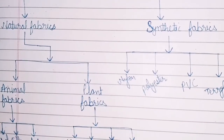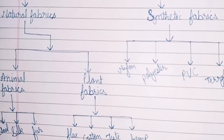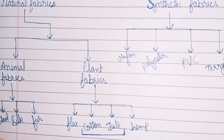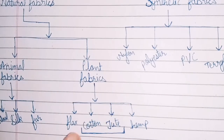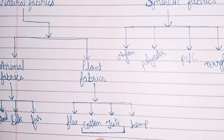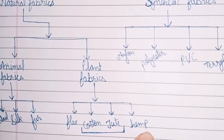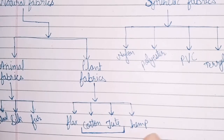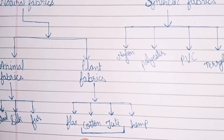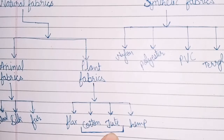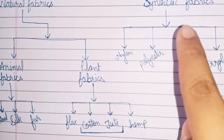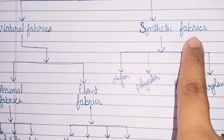Some examples of animal fabrics are wool, silk, and fur. Some examples of plant fabrics are flax, cotton, jute, and hemp. In this chapter we will also learn about cotton and jute in detail, and there are also synthetic fibers.